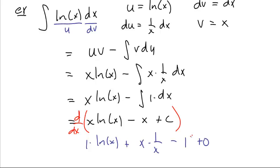Now I can use one cancels with this because that's just one and we are left with just natural log of x, which is what we wanted.